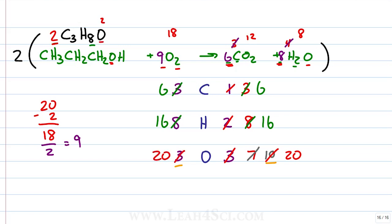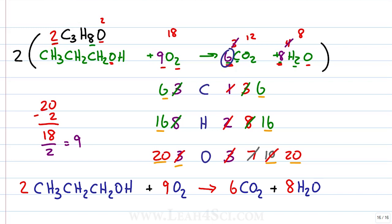And look at that, everything is balanced. We have 20 oxygen, 16 hydrogen, 6 carbons for a final balance of 2 propanol reacting with 9 oxygen to give us 6 carbon dioxide and 8 water.